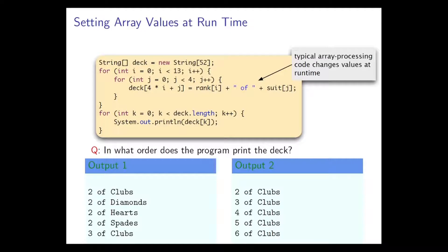Here's a quick understanding question: here are two possible orders in which we could have ended up putting the cards into the array deck and hence printing them out in the for loop at the bottom. Which of those two is correct? I'm not going to tell you — have a think about it, and if you're not sure, build the program and try it, because that will be educational.